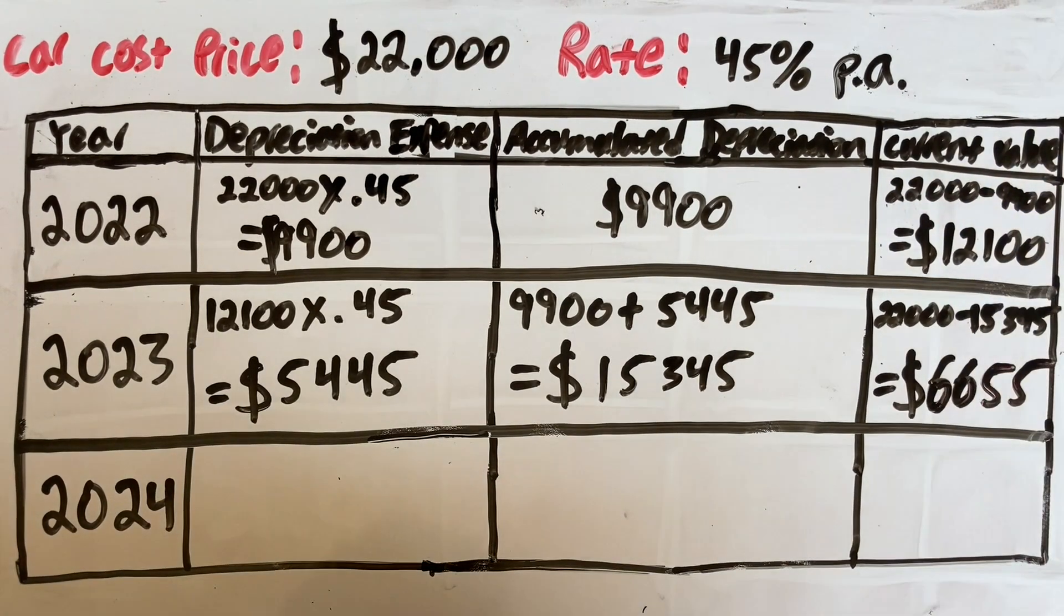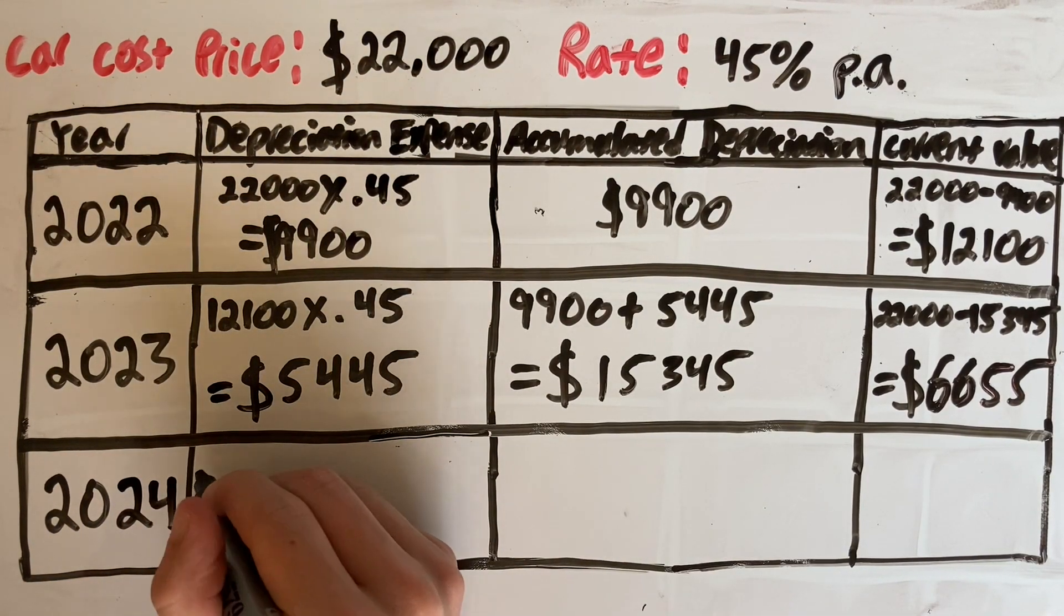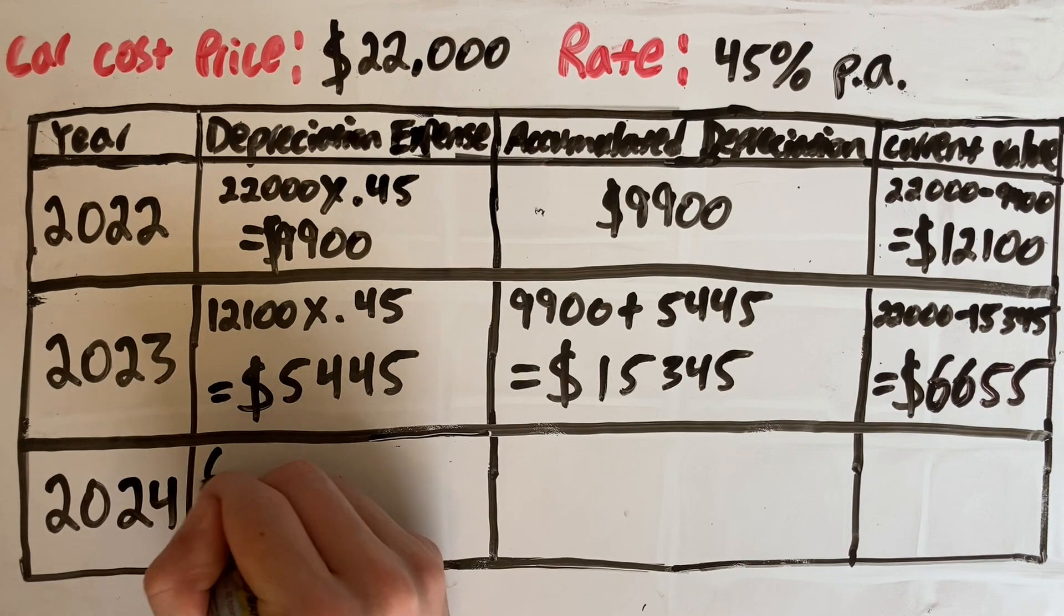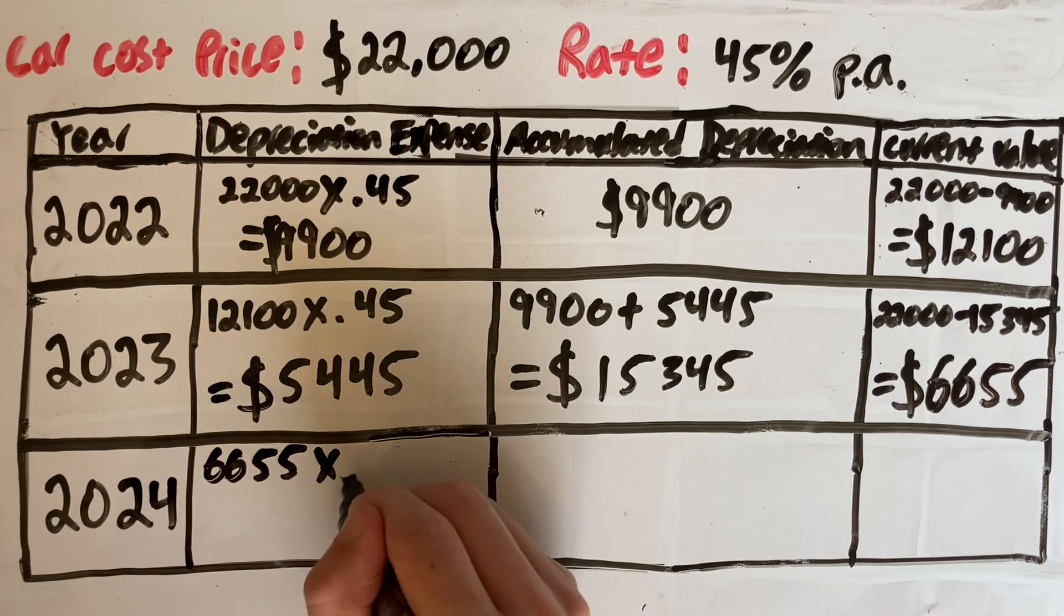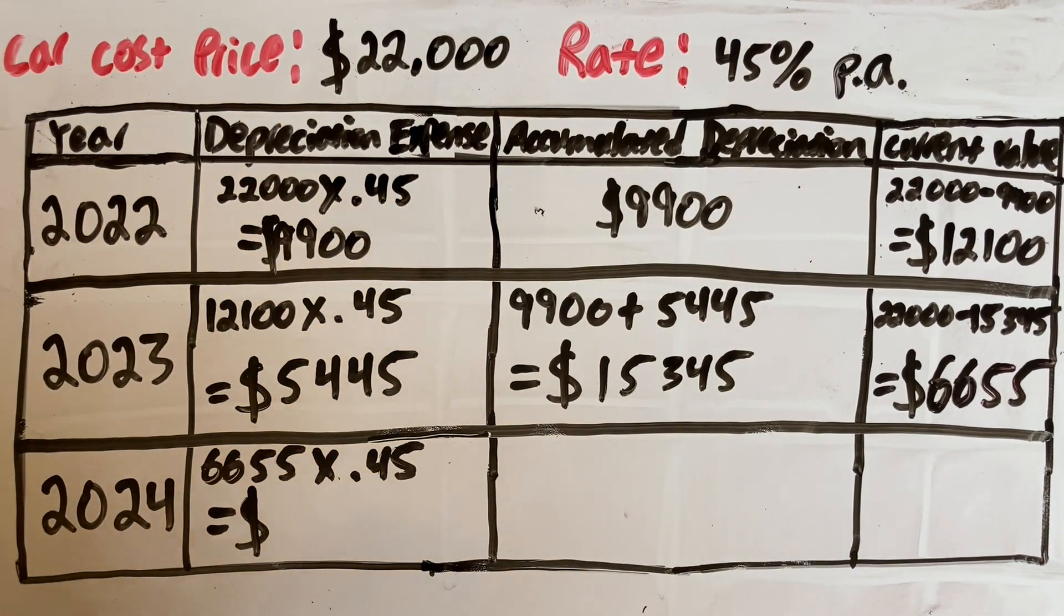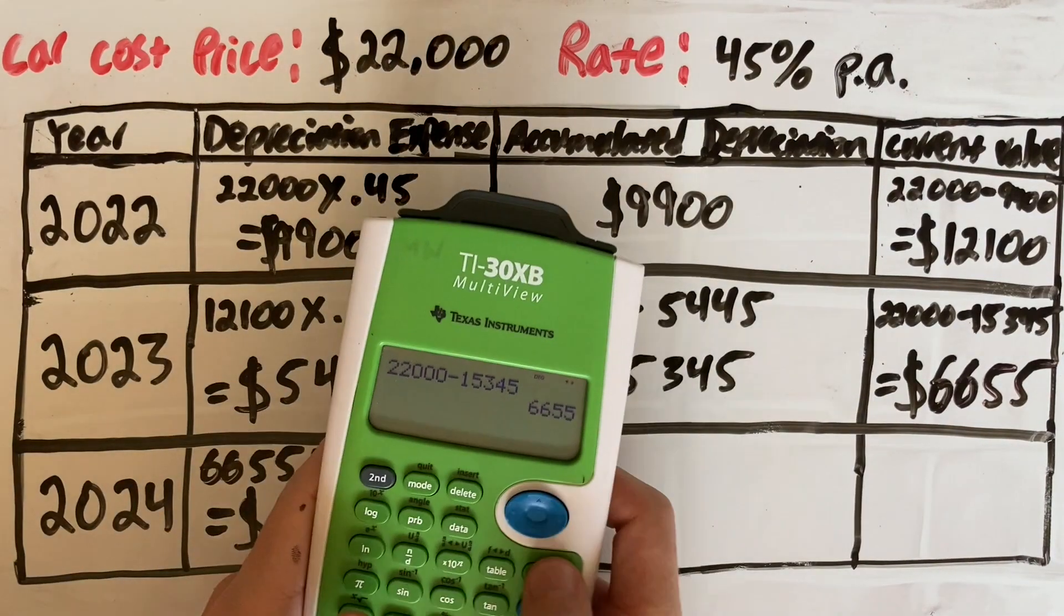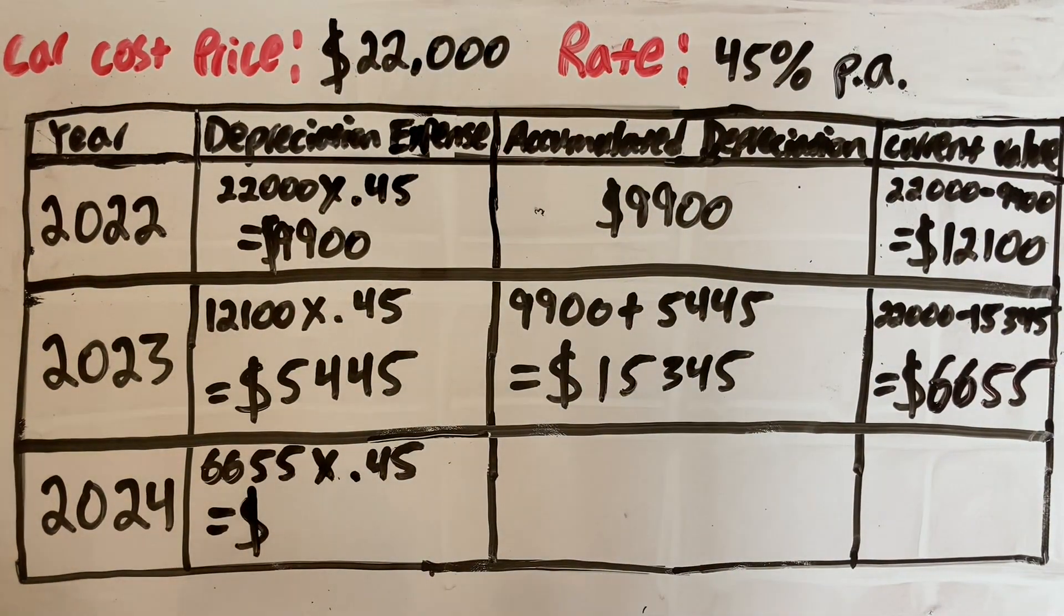Let's move on to the final year, 2024. Remember, take your current value, not the original. The current value for 2024 at the start is $6,655. We multiply that by our rate, which is 0.45. This time we're starting to deal with decimals. That's okay, you can deal with decimals, but you may have to round it if it gets more than two decimal places.